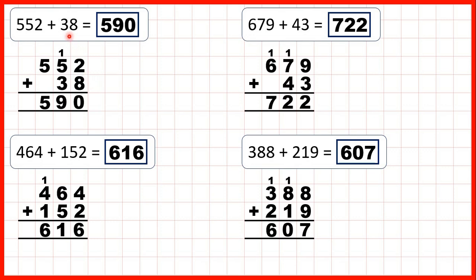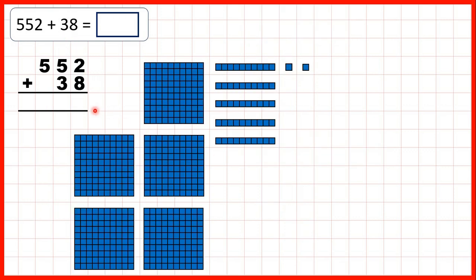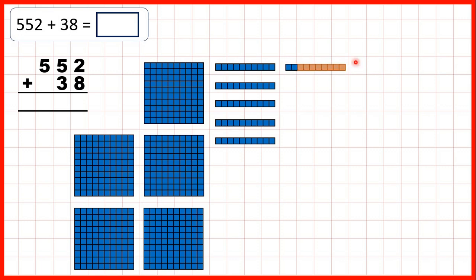Now let's take a closer look at these questions. We can show base 10 blocks to help us understand why this method works — why, if we get a two-digit answer when we add a column, we write the first digit above the next place value column along. Here we start with 552: that's 5 hundreds, 5 tens, and 2 ones. We added 8 ones, giving us 10 ones altogether. Because we can only have one digit in each place value, we exchange those 10 ones for one 10, which we put above our tens column. That's why we write the 1 above our tens column, and we don't have any ones left, so that's why we have a zero as the ones digit of our answer.